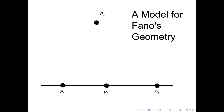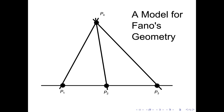Since axiom 4 says that between any two points there must be a line connecting them, there has to be a line connecting P1 and P4, a line connecting P2 and P4, and a line connecting P3 and P4. So we have to draw three more lines. The line between P1 and P4 can't also contain P2 or P3, because that would give two lines containing more than one common point, which Theorem 1.7 says can't be the case.